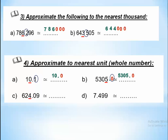Underline the units digit and circle the next-door digit. For 624.something: underline 4, circle the next digit — keep it as it is, so it will be 624.0. For 7.499: underline 7, circle 4 — less than 4, so keep the number as it is. The answer is 7.0. Thank you.